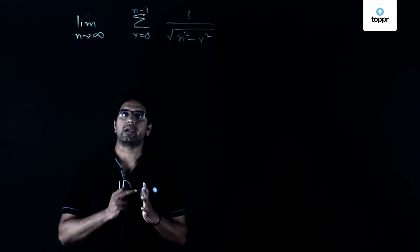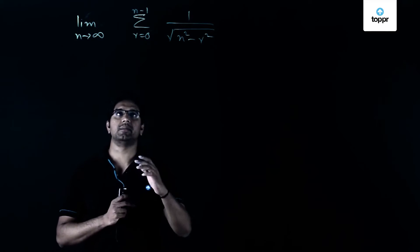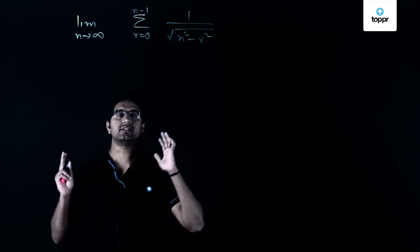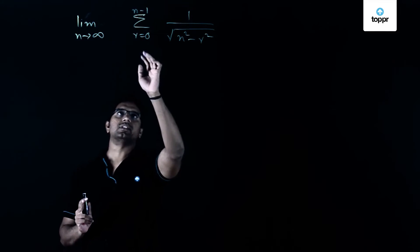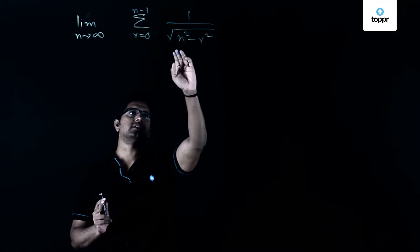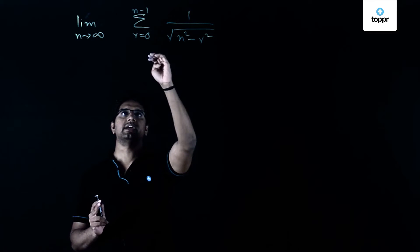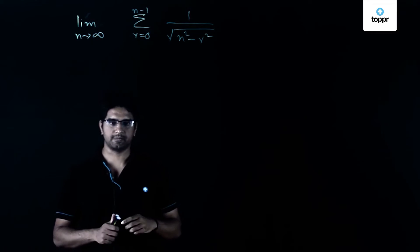In this problem we have been asked to evaluate a limit, and the limit is that of an infinite series. The series is defined as 1 by root n square minus r square, and it is given that r ranges from 0 to n minus 1.